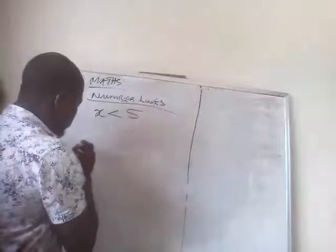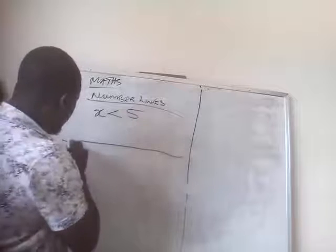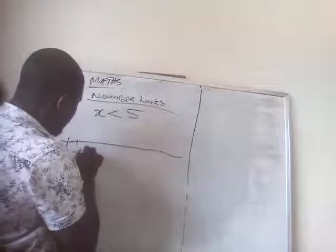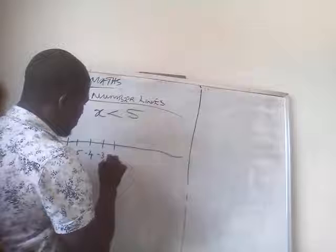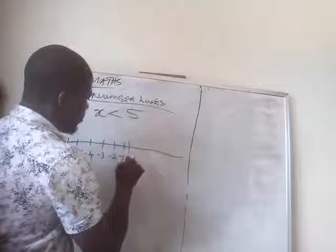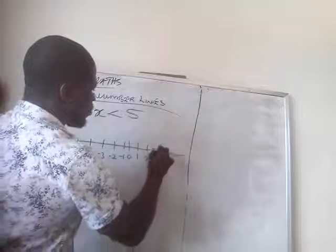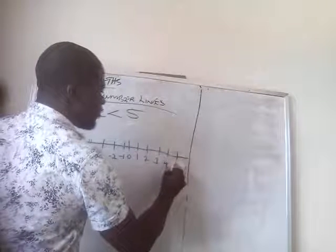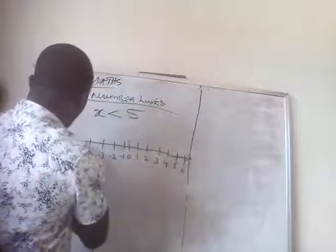If you have this, we have, let's say, minus 6, minus 5, minus 4, minus 3, minus 2, minus 1, 0. There is no minus 0. You have 1, 2, 3, 4, 5, 6. This continued, and this continued.